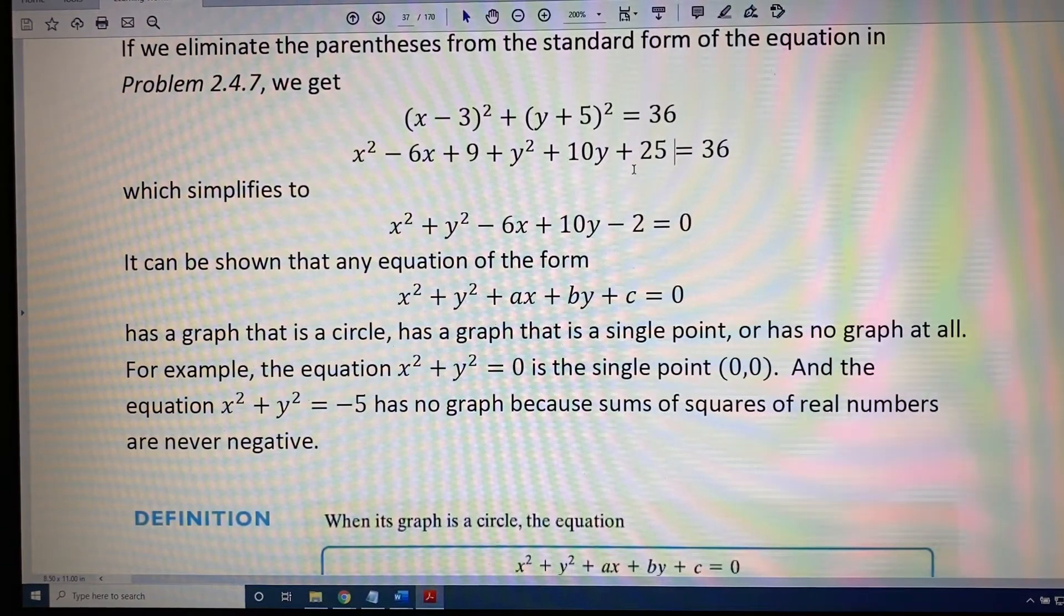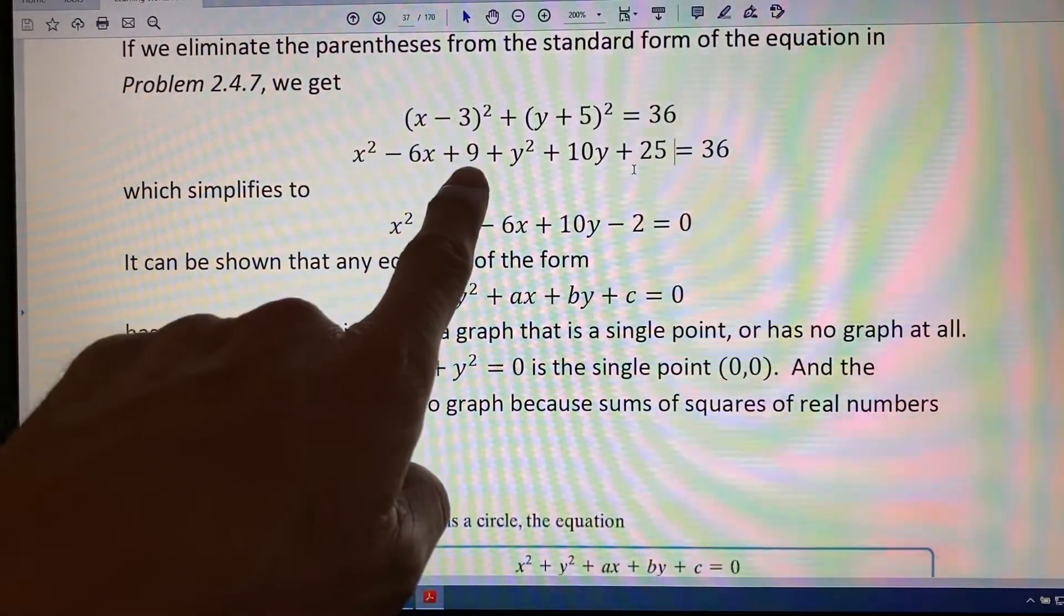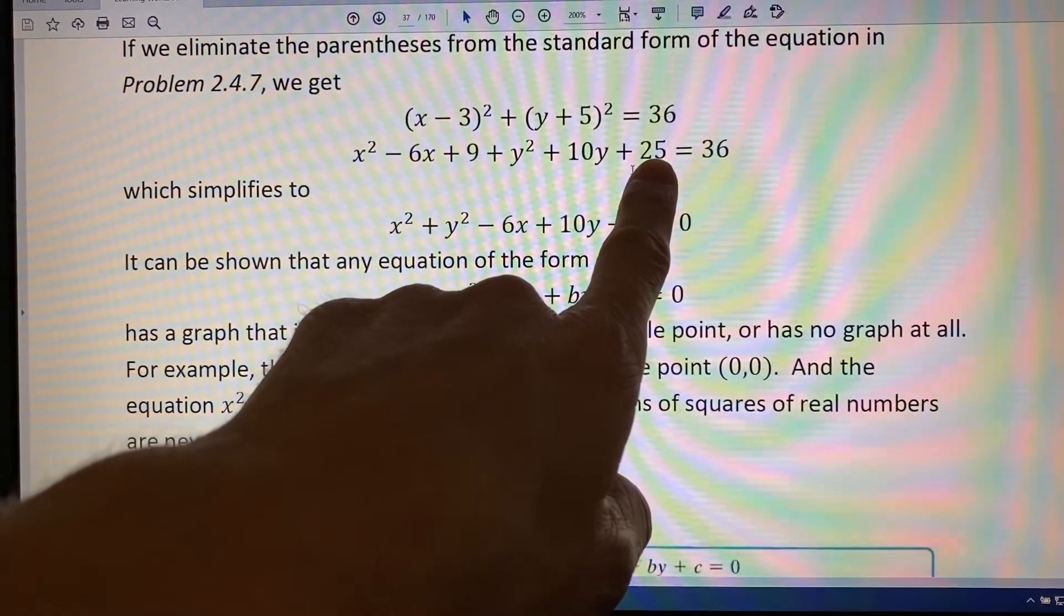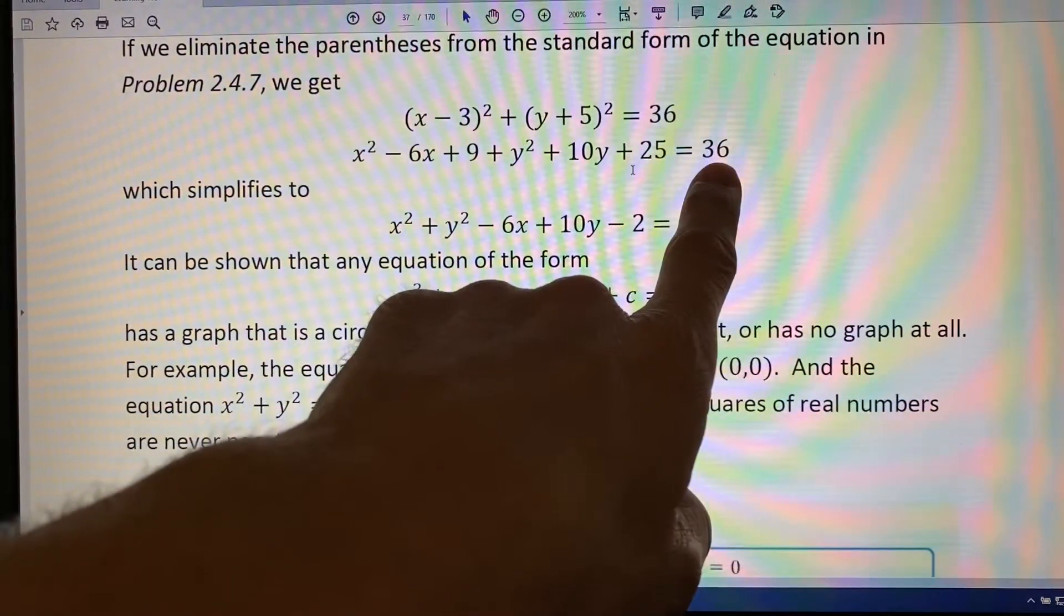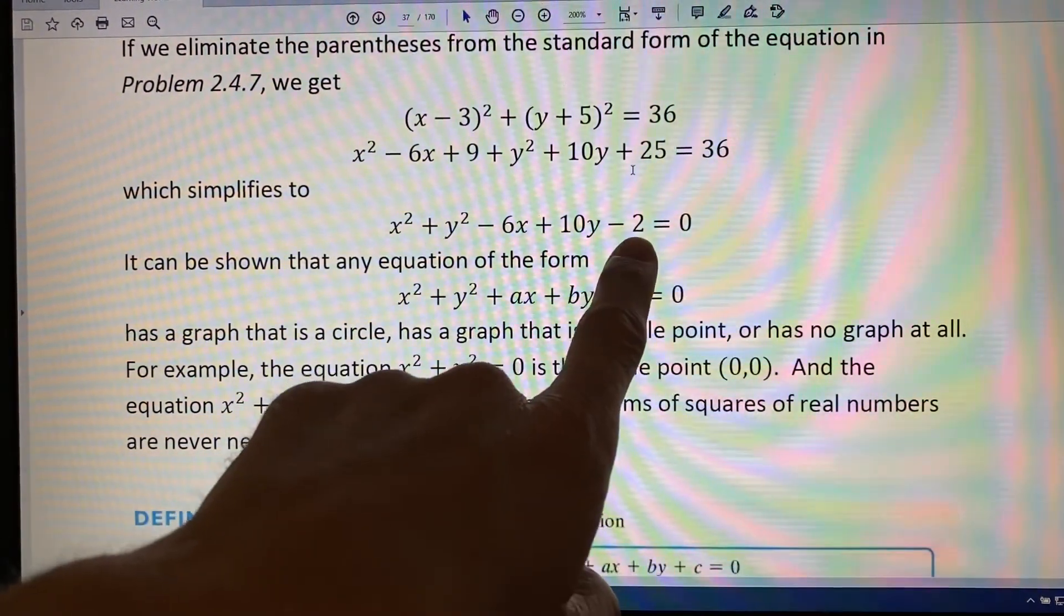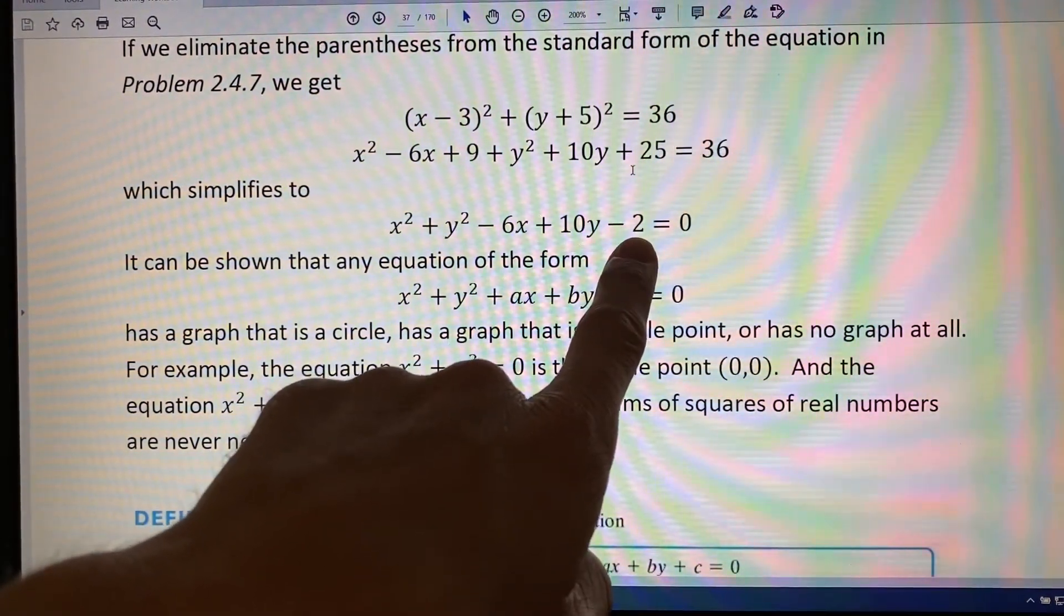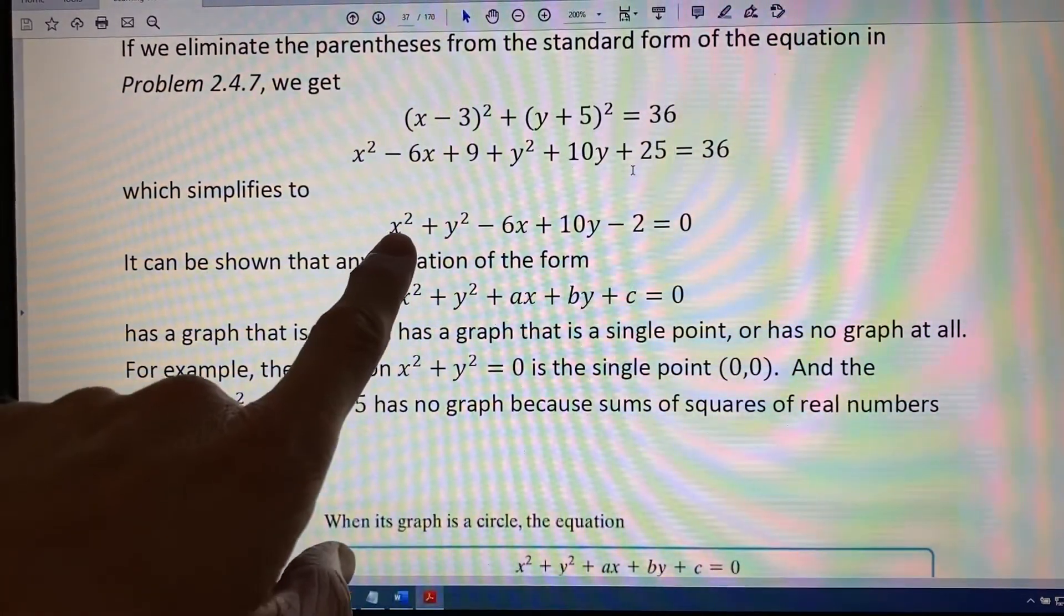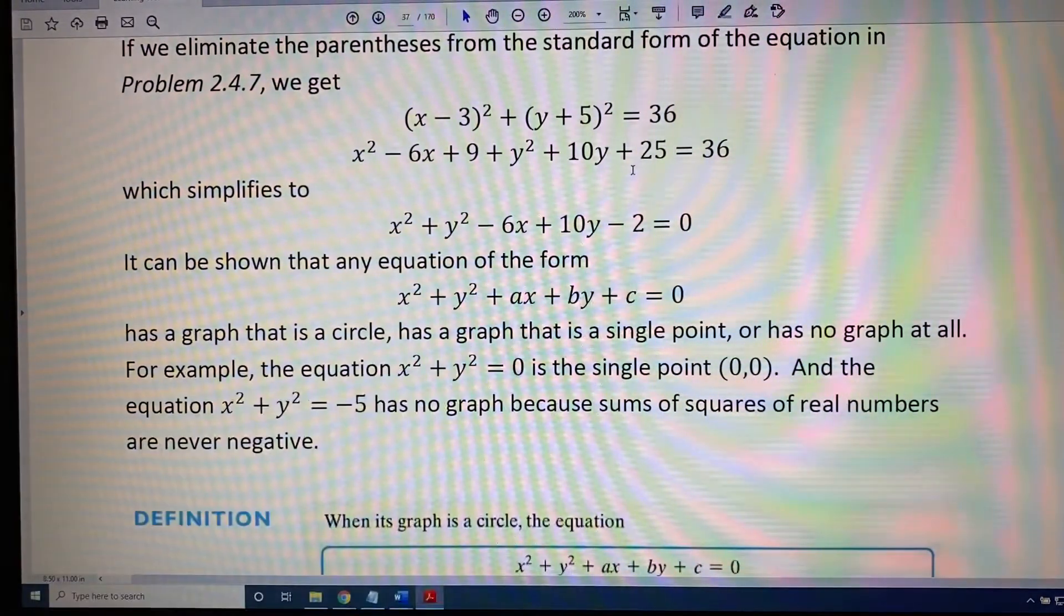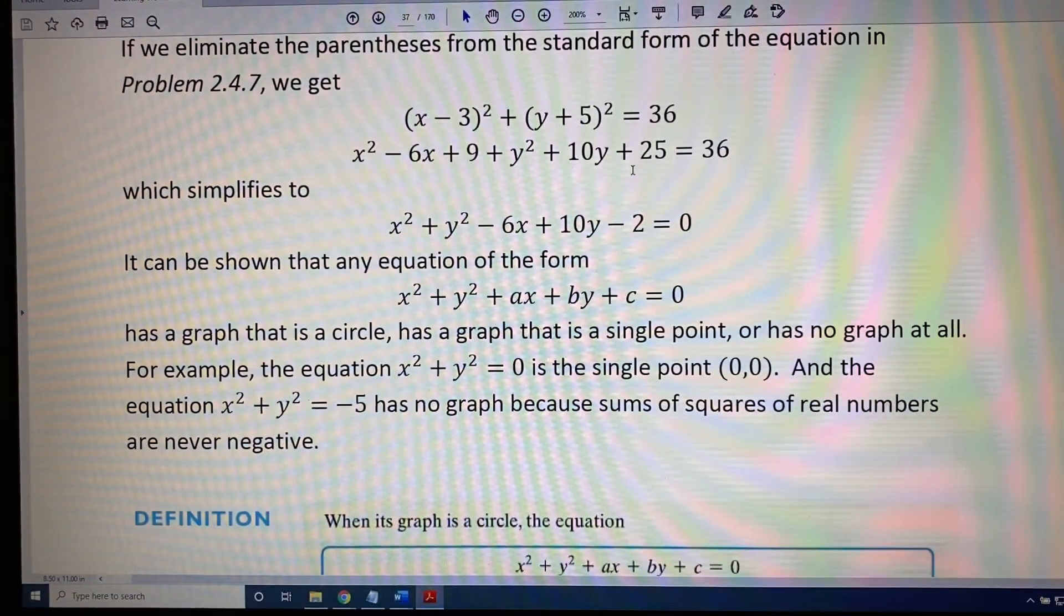Now all I have to do to get my general form is to combine the 9 and the 25 together, which makes 34, and then subtract 36 on both sides. So that would give me a 0 on the right, and 34 - 36 is -2. Therefore, my resulting equation would be x² + y² - 6x + 10y - 2 = 0.